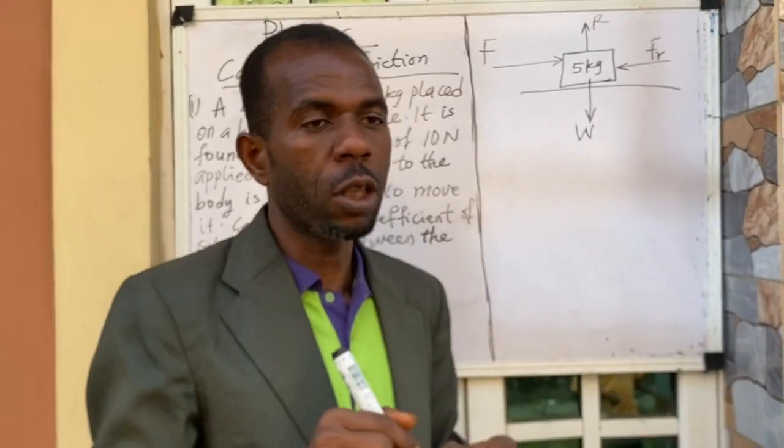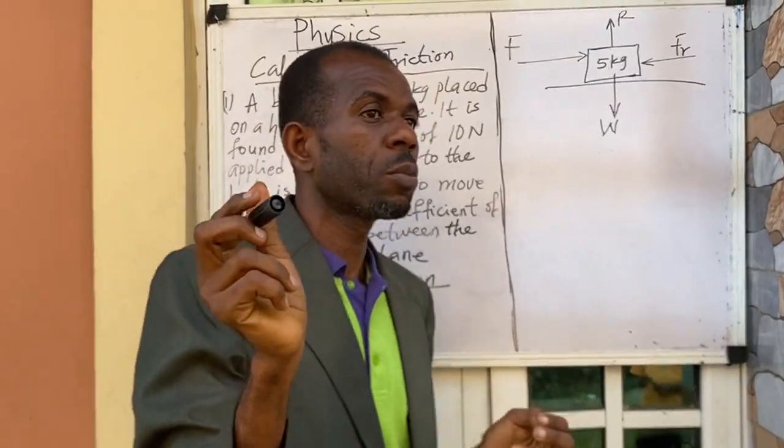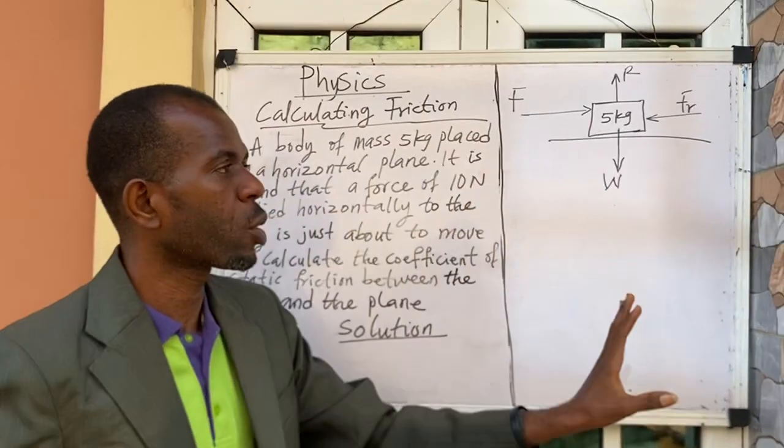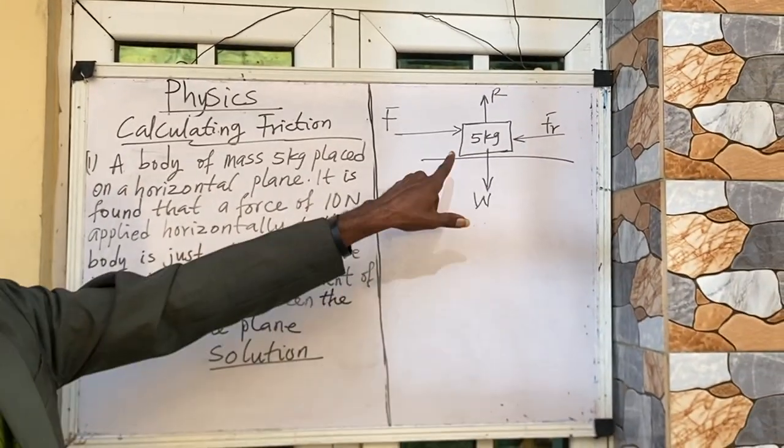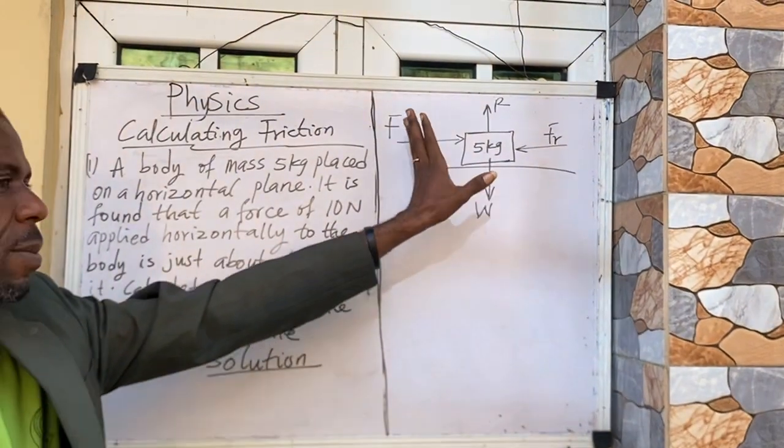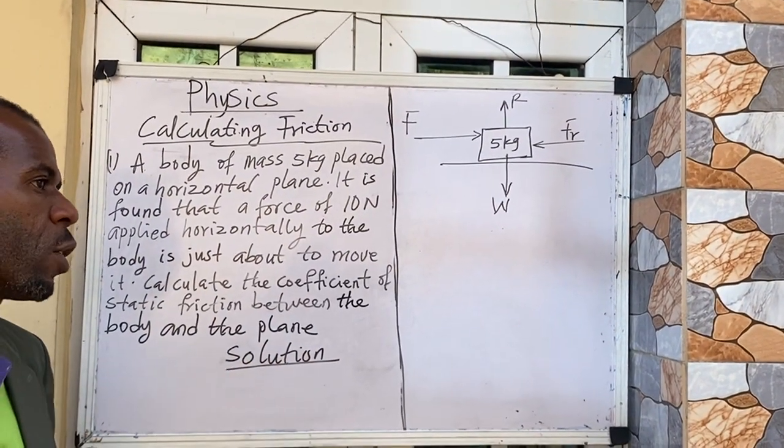Remember our fifth law of friction. I told you that the limiting friction and force - this is the body. So coming to solution, this is the body. Now let's use the diagrammatic representation.